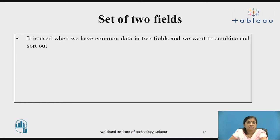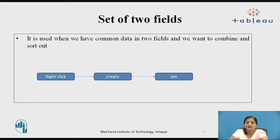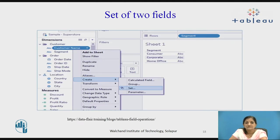Similarly, we can create a set of two fields. It is used when we have common data in two fields and want to combine and sort it out. The options for this are: right-click on the worksheet, choose the create option, and in create select 'Set'. When you click on set, you can choose the field names to be combined as one set.